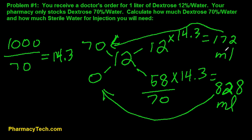And you can even double-check yourself by adding these up: 172 plus 828 equals 1,000 mils, which is the total volume we're looking for.